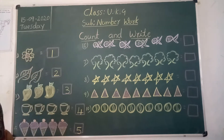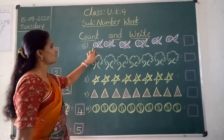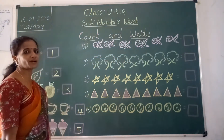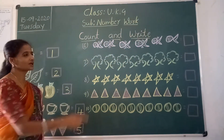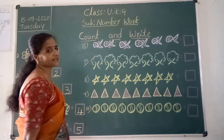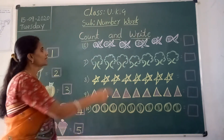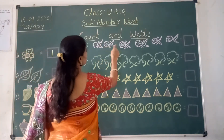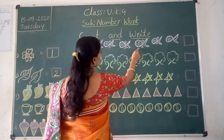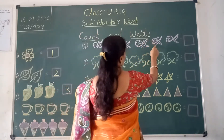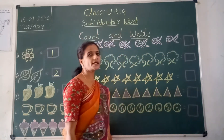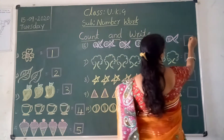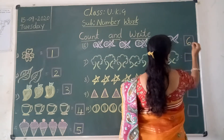Next picture. What are these? Fishes. How many fishes are there? Come, children: one, two, three, four, five, six. How many? Six. We should write in this box — number six.